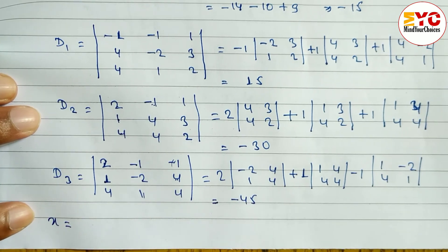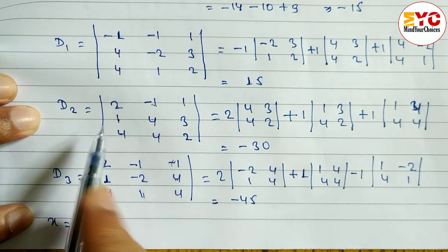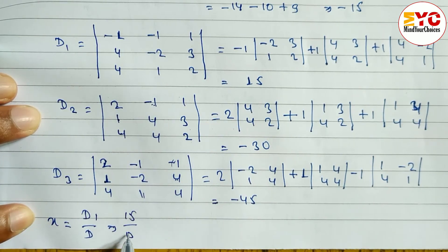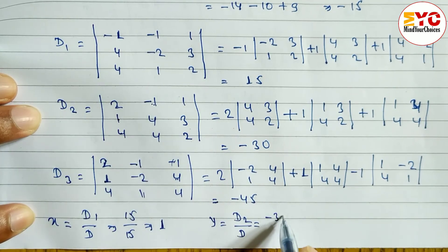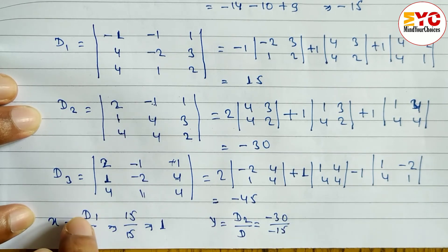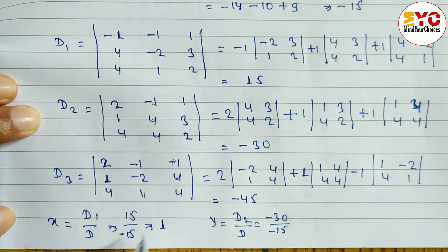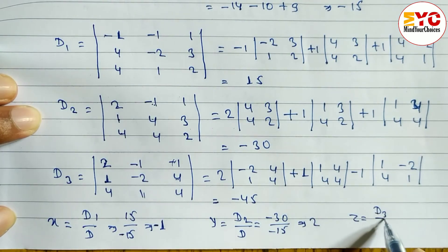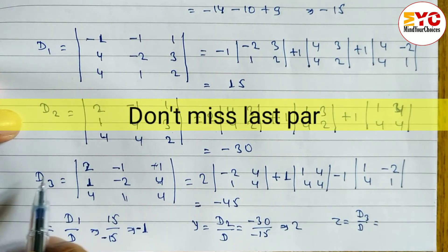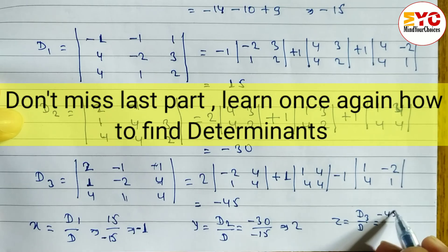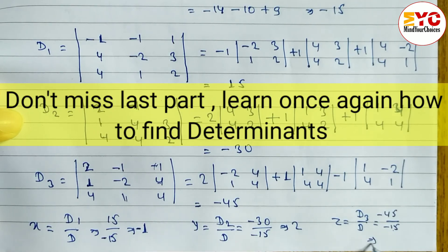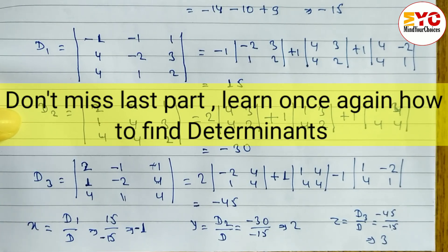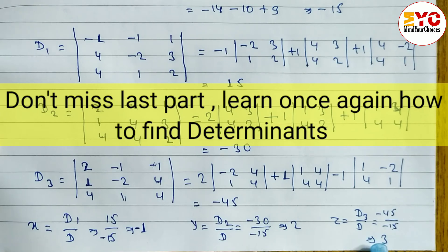Now we find x, y, z. x equals D1 divided by D = 15 divided by minus 15, so x equals minus 1. Wait — actually D1 is 15, D is minus 15, so x = 15 / minus 15 = minus 1. y equals D2 divided by D = minus 30 divided by minus 15 = 2. z equals D3 divided by D = minus 45 divided by minus 15 = 3. So x = minus 1, y = 2, z = 3.